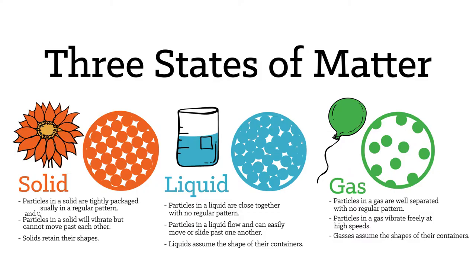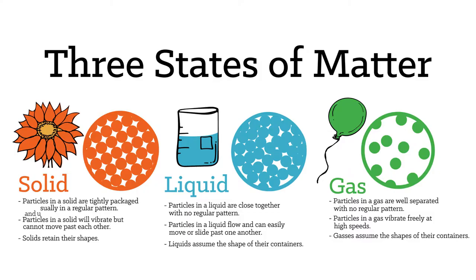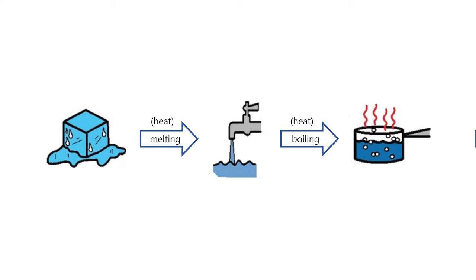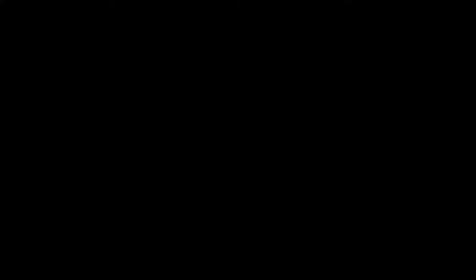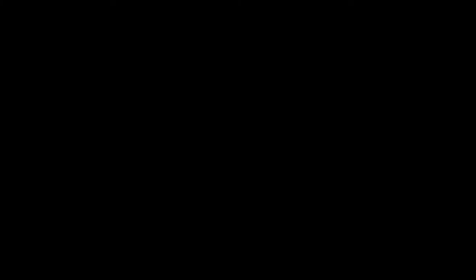The general consensus was that there were three states of matter. Heat up a solid, it melts, and you get a liquid. Heat up a liquid, it boils, and you get vapor. But what happens if you continue to heat up vapor? After one great pandemic, two world wars, and in the middle of a very cold one, scientists gradually came to accept plasma as the fourth state of matter.